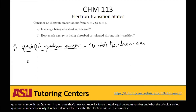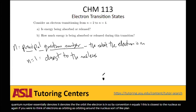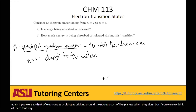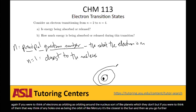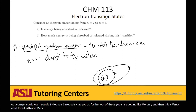By convention, n equals 1 is closest to the nucleus. If you were to think of electrons as orbiting around the nucleus — sort of like planets, which they don't — think of n equals 1 as being the orbit of Mercury, the closest to the sun. As you go further out, you get n equals 2, n equals 3, n equals 4, like Venus's orbit, then Earth, Mars, and on and on.